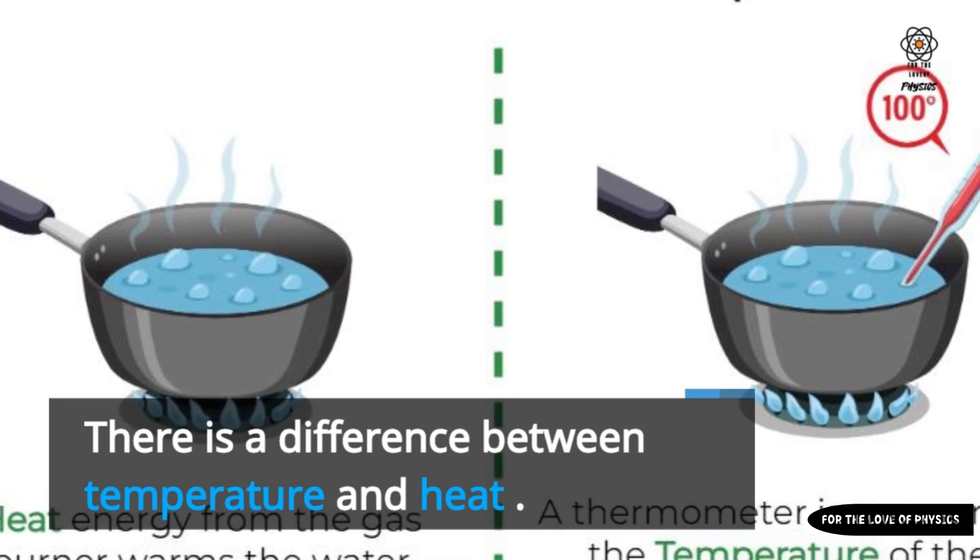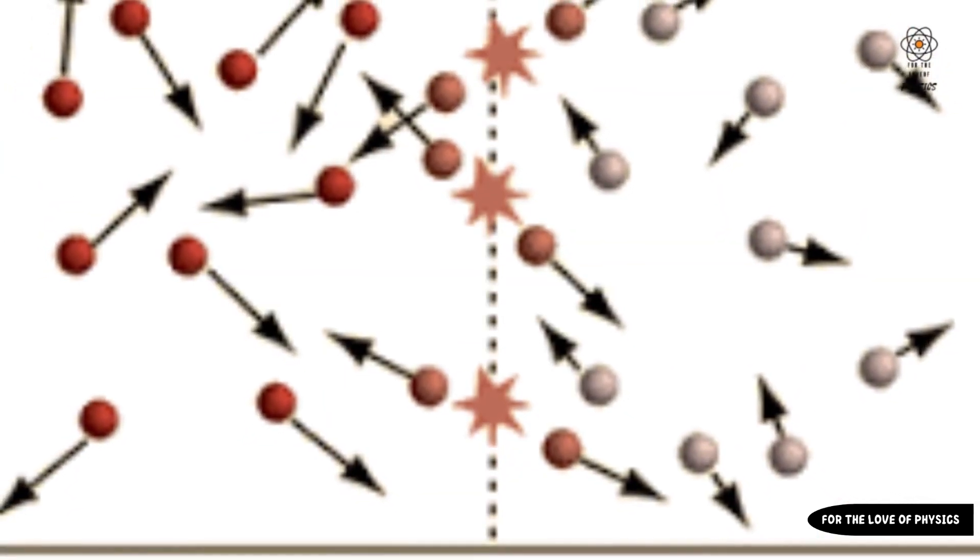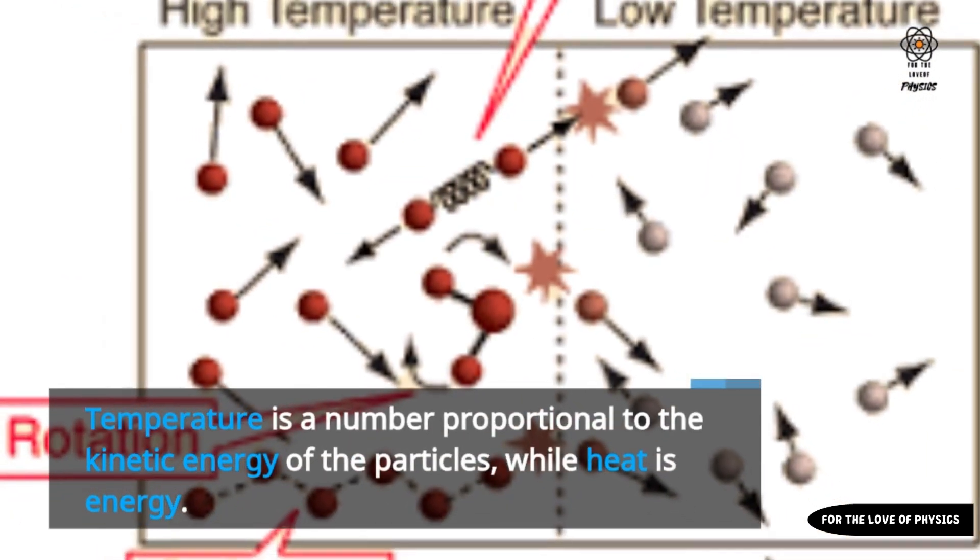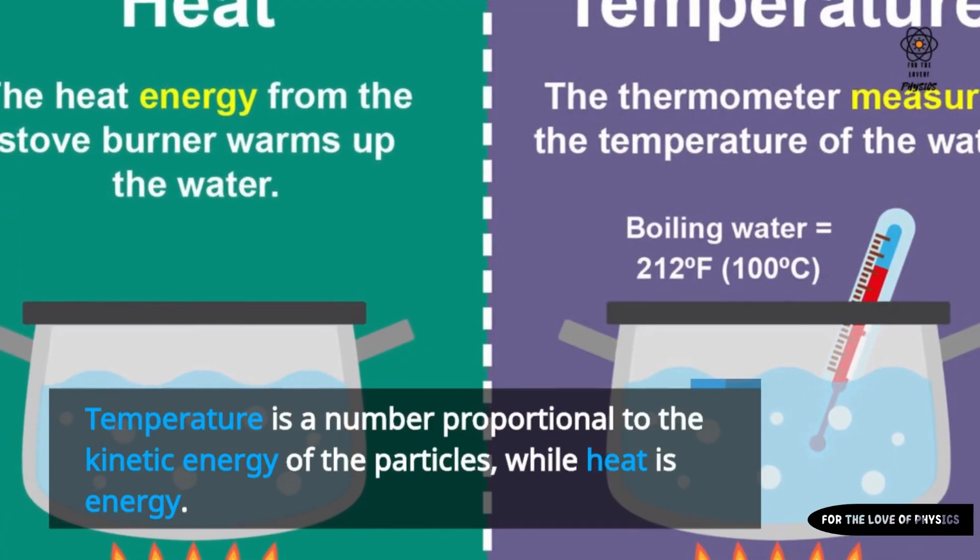There is a difference between temperature and heat. Temperature is a number proportional to the kinetic energy of the particles, while heat is energy.